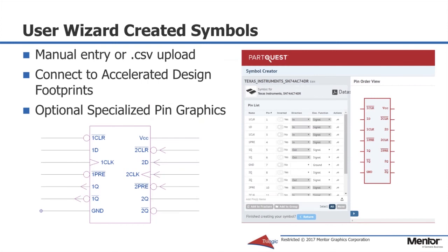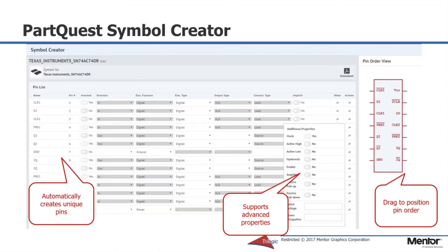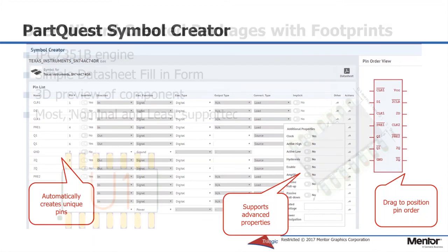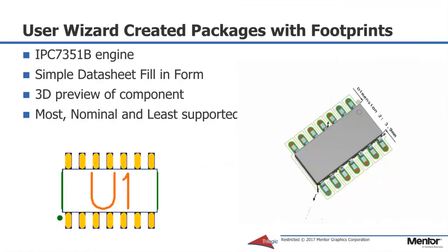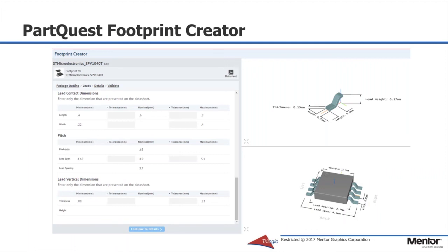If the symbol or footprint is not available, there are wizards built into PartQuest such as the symbol wizard. The pin information can be entered manually or uploaded from a .csv file, and pin graphics can be defined automatically for the system you are using. Here you can see the table created for this particular part allowing the customization of the symbol, then the symbol will automatically be created based on this definition. There is also an IPC7351B footprint wizard built into PartQuest where different specifications from the datasheet are used to automatically create the footprint or decal needed for a particular design process. Fill in the necessary information from the datasheet and a model preview is automatically created; the program then analyzes the package and creates an IPC7351B footprint.